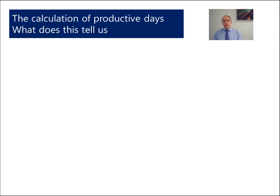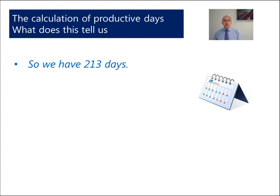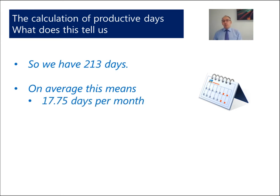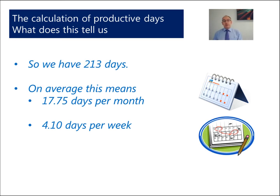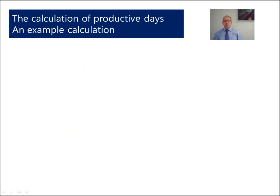Well, what does this tell us? Of our 213 days, on average this means that we have got about 17.75 days per month available for work. And over the year, if we average it out, it is about 4.1 days per week, which is why you may sometimes hear that our team are only productive for 4 days a week. As a percentage calculation, we can see that 213 divided by 253 gives us about 84% of the time.